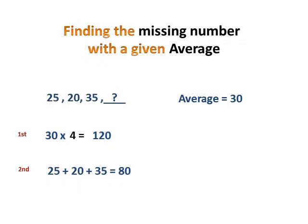That's the second step. The third step is subtracting the product on the first step by the sum in the second step. And so you have 40 as an answer. So that means the fourth number is 40.